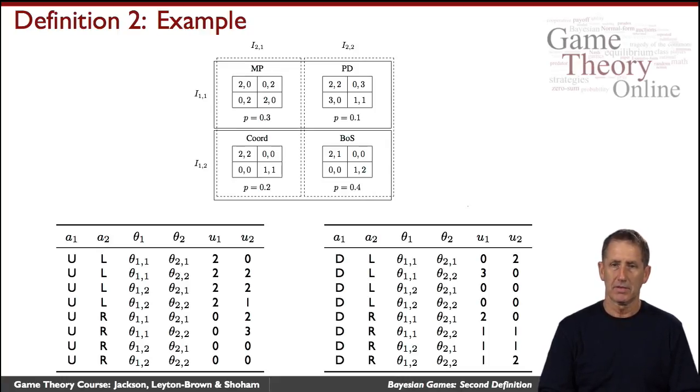Consider this game that we saw when we discussed the first definition of Bayesian games. Again, we had four possible games being played, chosen at random by nature according to this prior, and we had the private signals, the information sets that the agents found themselves in.